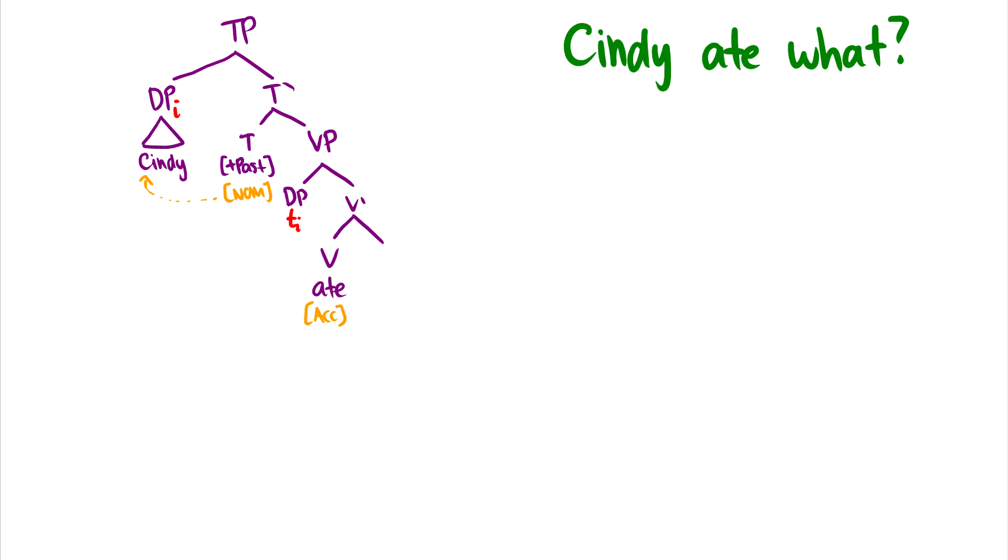With that in mind, let's do some trees. Here's this tree for Cindy ate what, which is an echo question. And here I have some movement. So Cindy is the eater. So Cindy has started in spec VP and moved up to spec TP to get case from T. And then we have V8. And now what about the object?